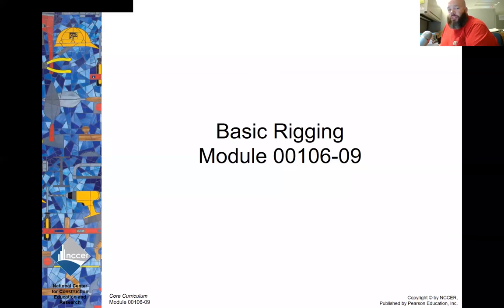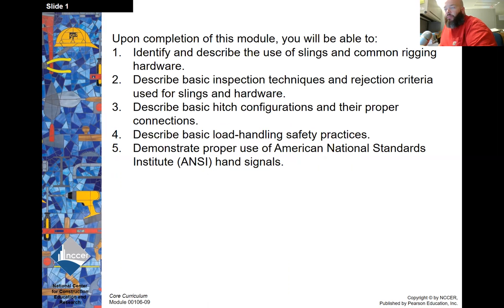Welcome to Chapter 6, Basic Rigging. Upon completion of this module, you will be able to identify and describe the use of slings and common rigging hardware. Describe basic inspection techniques and rejection criteria used for slings and hardware. Describe basic hitch configuration and their proper connections. Describe basic load handling safety practices and demonstrate proper use of American National Standard Institute hand signals.